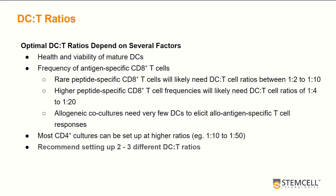If you're doing CD4 DC co-cultures, generally most people will set them up at higher ratios. Please bear in mind these are very general statements, and ultimately we need to work out the optimal DC-T-cell ratio experimentally. As part of your optimization, I would recommend setting up 2 to 3 of these different ratios.